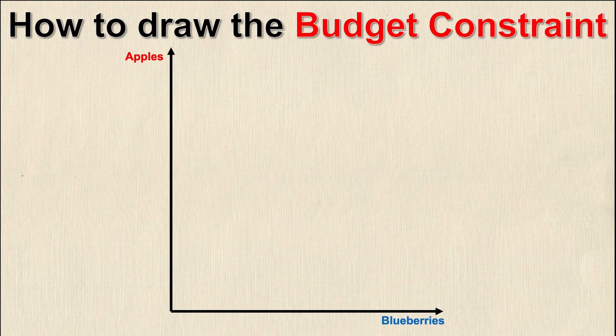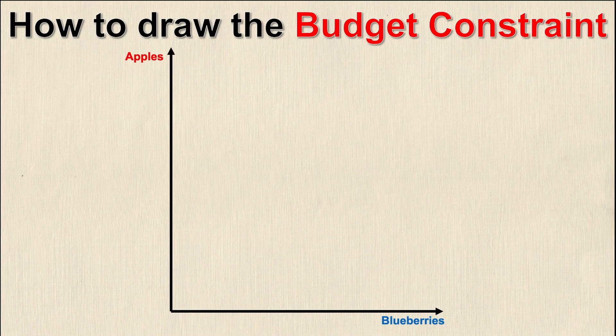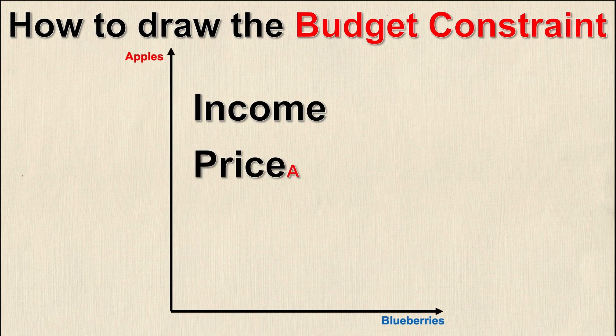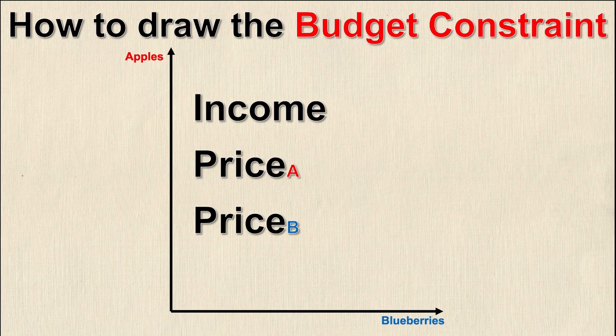The next thing you're going to need are three key pieces of information: your total income, the price of good A, and the price of good B. This could be good X and good Y, good A and good B, it doesn't matter. In this case we're using A and B.